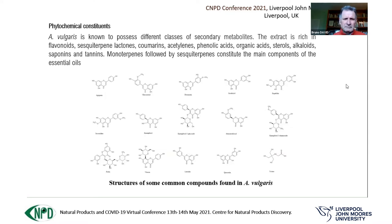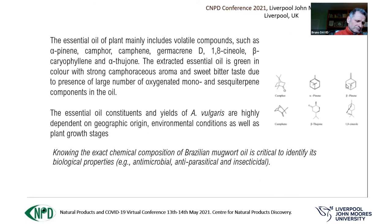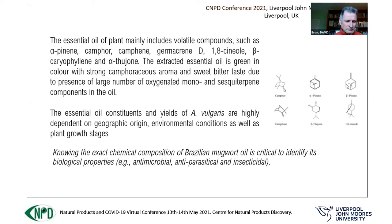This plant species is known to possess different classes of secondary metabolites like flavonoids, alkaloids, saponins, and tannins. Monoterpenes and sesquiterpenes are the main components of essential oils from this plant species. Essential oils of Artemisia vulgaris mainly include volatile compounds such as alpha-pinene, camphor, germacrene D, caryophyllin, and thujone. The extracted essential oil is green in color with a strong aroma and a sweet-bitter taste. The yield of Artemisia vulgaris essential oil is highly dependent on geographical conditions as well as the plant growth stage, making it important to know the exact chemical composition of the plant species growing in a particular geographical region in order to identify its biological properties.